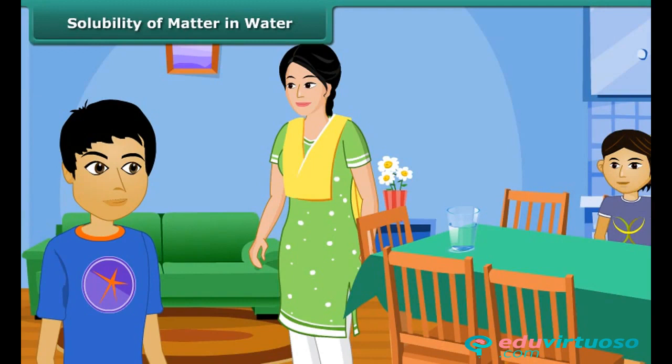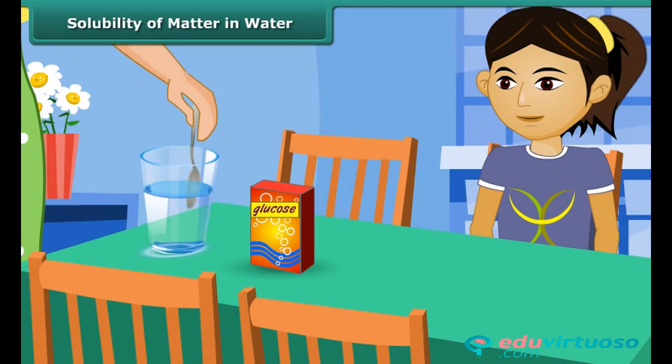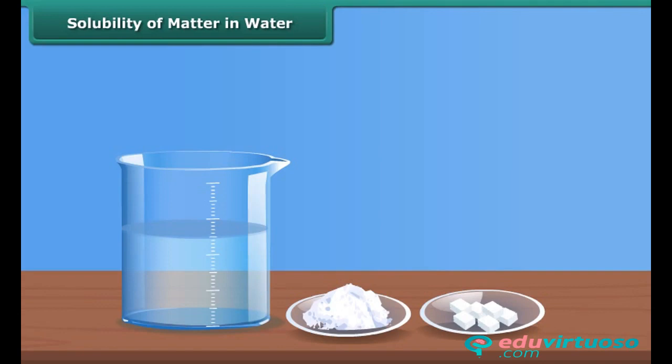Pile's brother comes back home after a football match. He is drenched in sweat. Her mother takes a glass of water, adds a spoonful of glucose, and gives it to him for instant energy. Pile notices that glucose dissolves in water instantaneously. She decides to experiment with some other substances. She observes that some substances dissolve easily in water, like salt, sugar, etc.